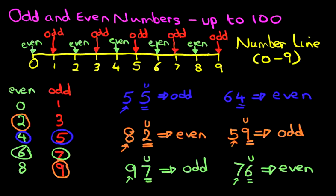And that is how we work out odd and even numbers up to 100. If you know the odd and even numbers from zero to nine, you can work out the odd and even numbers for any number.